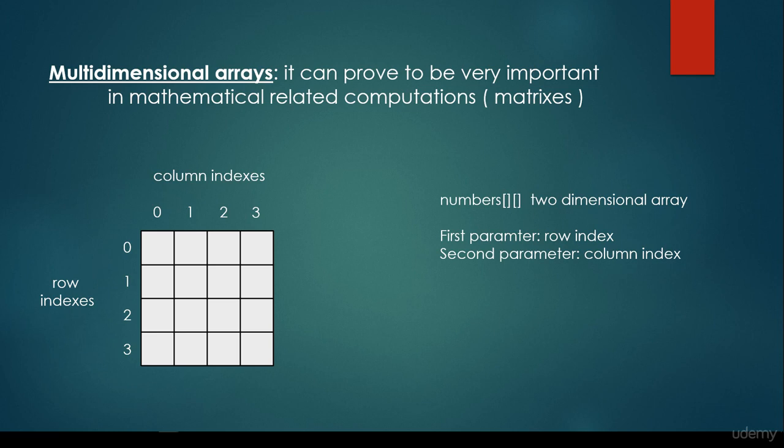So we have the row index, and we have the column index. So we are able to construct this numbers two-dimensional array. The first parameter refers to the row index, the second parameter refers to the column index. So for example, this numbers[2][3] means that it is in the numbers two-dimensional array where the row index is equal to two and the column index is equal to three. So it references this red square.